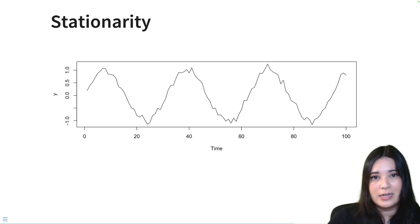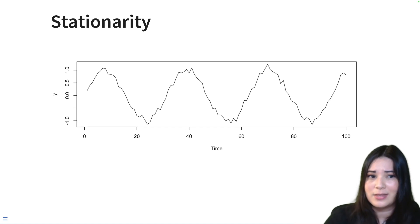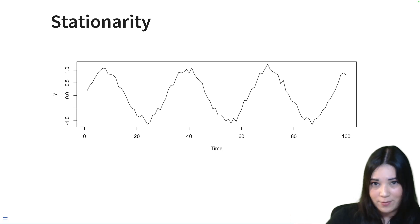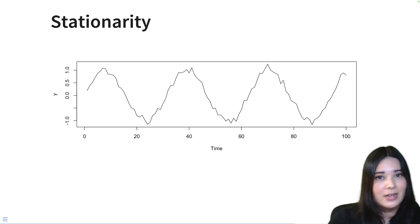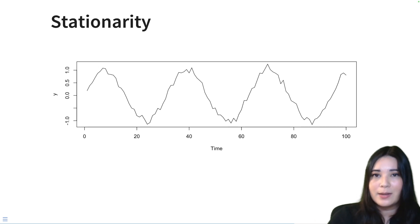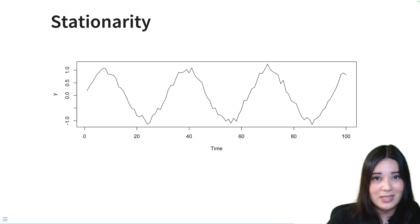Here's a third non-stationary time series. Here we see the mean actually looks relatively constant — it's always around zero — and the variance across the time series looks constant as well. But there is very clear seasonality; it almost looks like a sine wave going up and down and oscillating over time. So this is also not a stationary time series. And why is this important? It turns out that a lot of time series models assume that your time series is stationary, so we need to often check to see if that's the case.